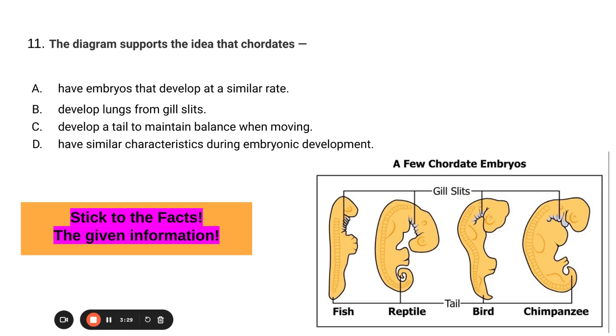And then the last one, the diagram supports the idea that chordates have similar characteristics during embryonic development. Well, that's true. That whole statement is true. They have similar characteristics. We see the gill slits and the tail are labeled, and it is during embryonic development, and we see that in the title of the diagram, a few chordate embryos.